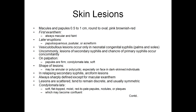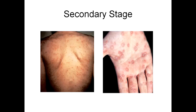Condyloma lata are soft, flat-topped, moist, red to pale papules, nodules, or plaques which may become confluent. These are perianal or genital syphilitic lesions. The difference from genital warts is that these are soft and flat-topped and very moist, whereas genital warts are not soft and not moist unless superimposed with Staph aureus infection. The accumulation of genital warts is called condyloma acuminata, while in syphilitic lesions it is called condyloma lata.